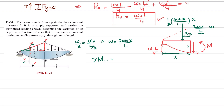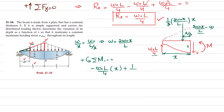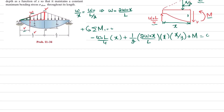Applying moment equilibrium about the cut point, taking counterclockwise as positive: -(w-naught·L/4)·x + (1/2)·(2w-naught·x/L)·x·(x/3) + M = 0. Solving and rearranging gives the bending moment: M = (w-naught / 12L) · (3L²x - 4x³).